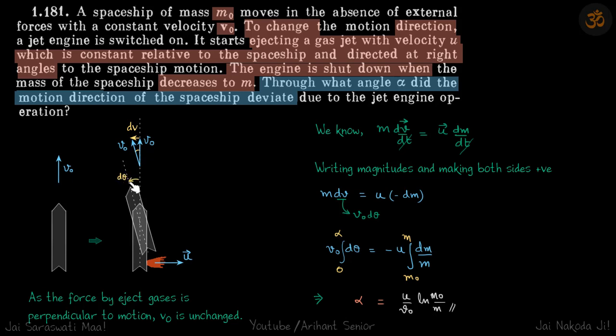We need to find the relation between θ and the mass of the rocket. So let's get to our original equation which we have seen in previous problems: m dv/dt is equal to u dm/dt.